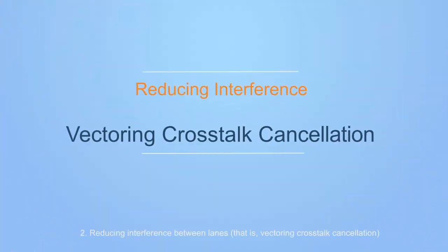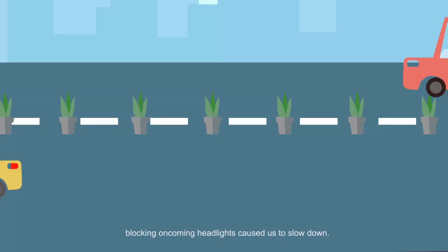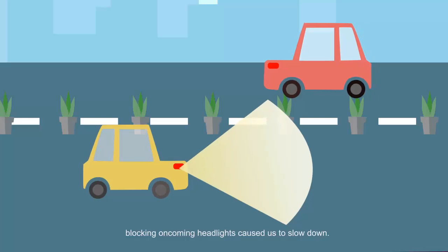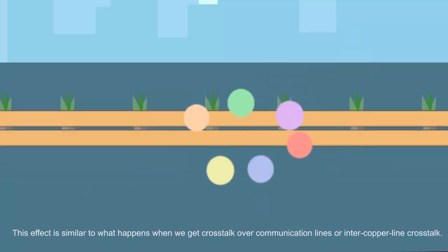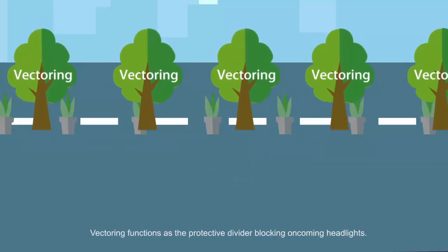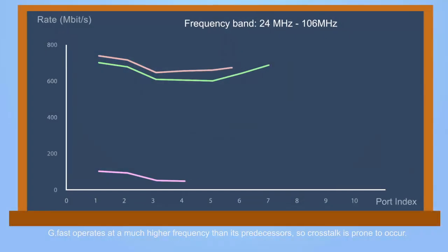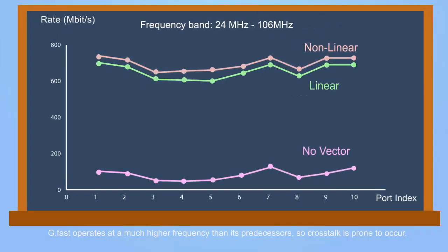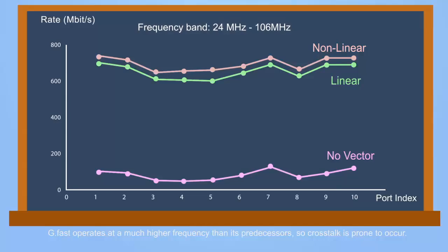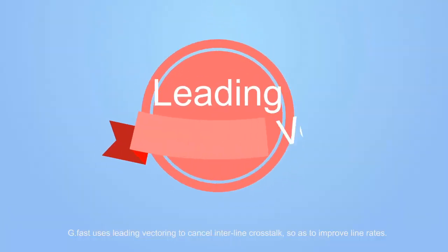Factor 2: Reducing interference between links, that is, Vectoring Crosstalk Cancellation. At night, the lack of a protective divider blocking oncoming headlights causes us to slow down. This effect is similar to what happens when we get crosstalk over communication lines, or inter-copper line crosstalk. In order to prevent crosstalk, we use Vectoring, which functions as the protective divider blocking oncoming headlights. G.Fast operates at much higher frequencies than its predecessors, so crosstalk is prone to occur. G.Fast uses leading vectoring to cancel inter-line crosstalk so as to improve line rates.